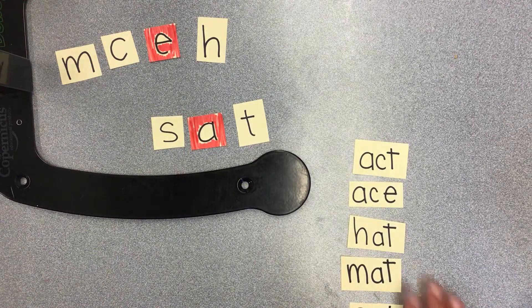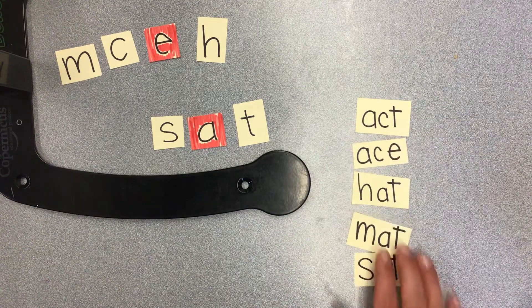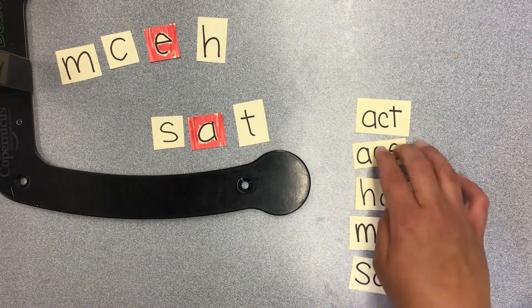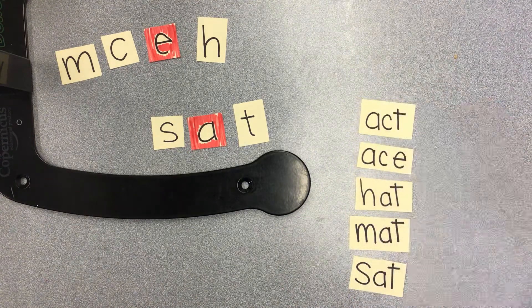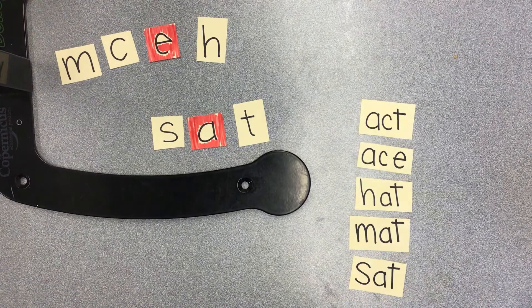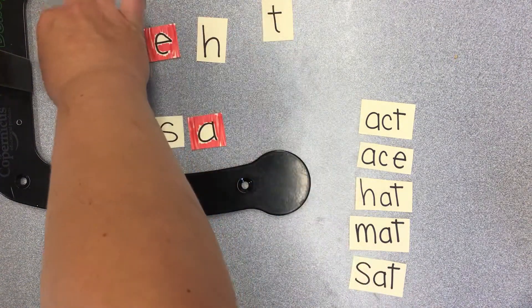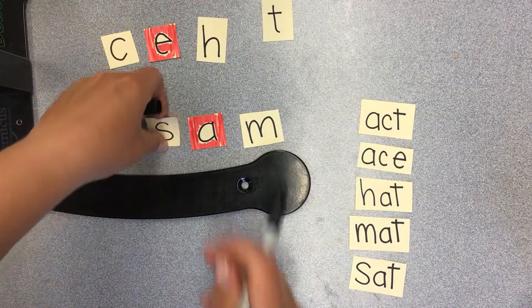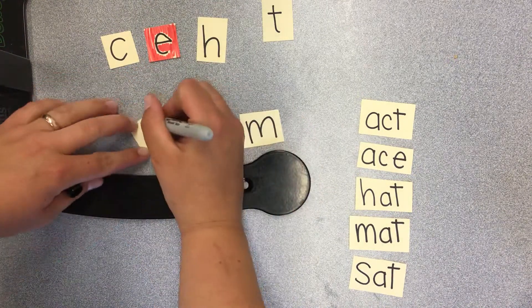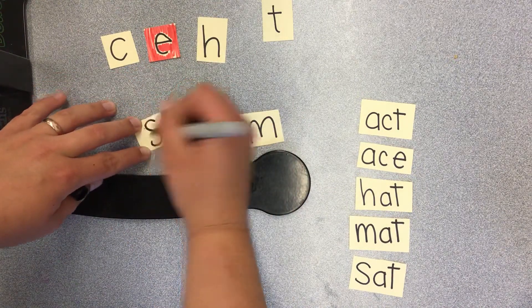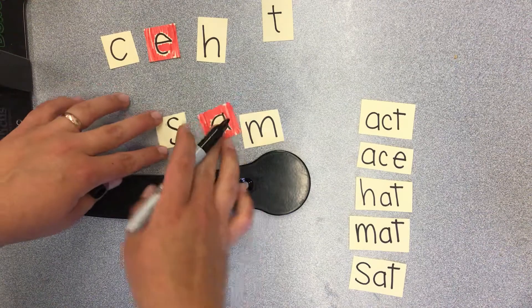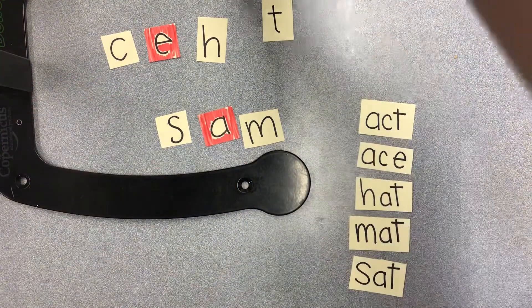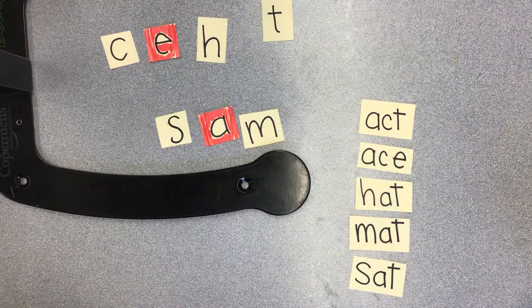Now you're going to change one thing to make a name, which is Sam. Is Sam coming to the party? On the other side of this S should be a capital, because names always start with a capital. So there is the name Sam.